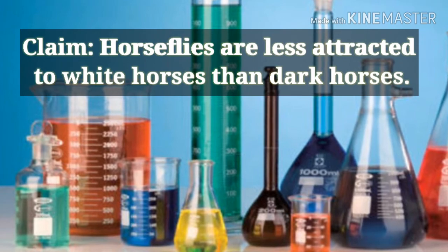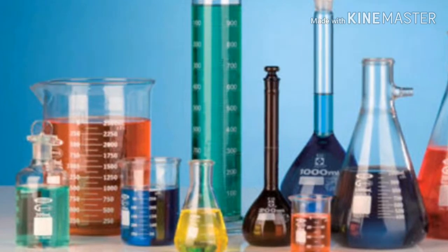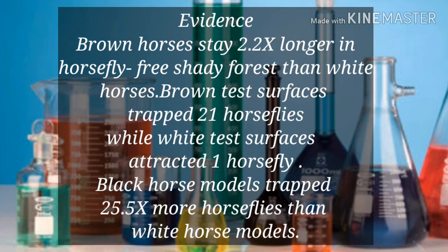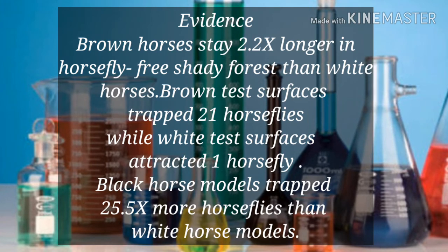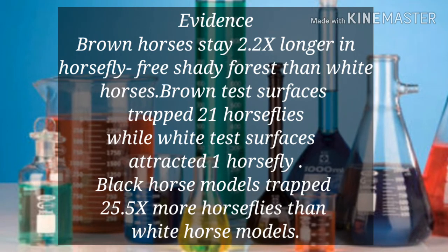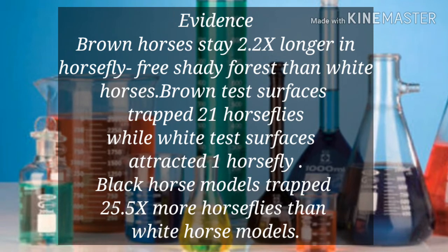For the evidence: brown horses stay 2.2 times longer in horsefly-free shady forests than white horses. Brown test surfaces trap 21 horseflies while white test surfaces attracted one horsefly. Black horse models trap 25.5 times more horseflies than white horse models.